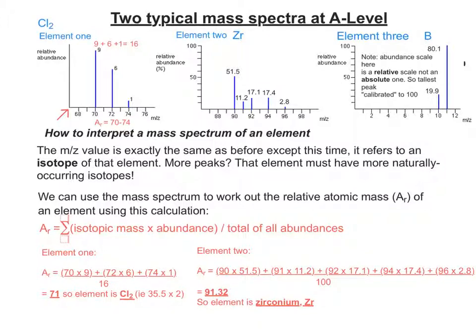So element three, being boron, provided you with the actual data. Please don't worry about the little footnote there. All you'd have to do is use 80.1 and 19.9 in your calculation. You'll be given that. The reason that the 80.1 appears to be level with 100 is because of a calibration that is done with the mass spectrometer, which you don't have to worry about at A-level.